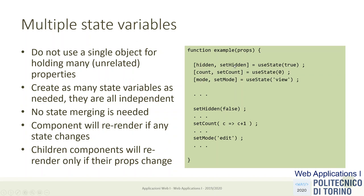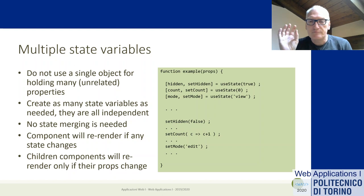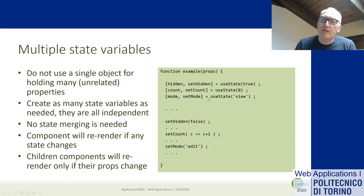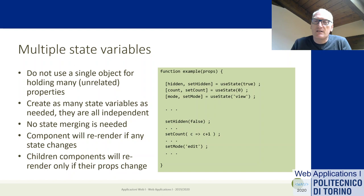Instead of having one state with many properties, we have many single variables each with its own private function to update it. Apart from that, the concept of state and the rules for initializing and updating are exactly the same as with class components. We can also define event handlers inside the function and pass them — for example the setCount function — down to children as properties, just as we could with class components.